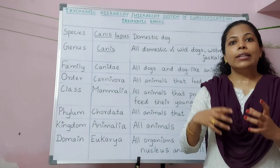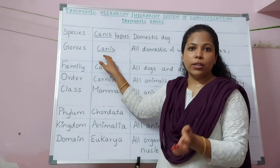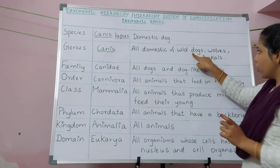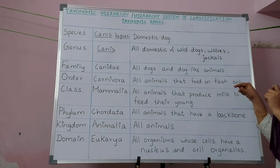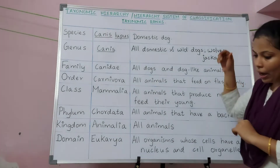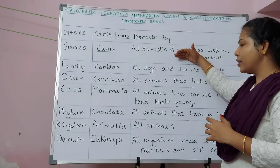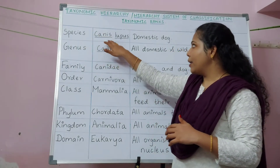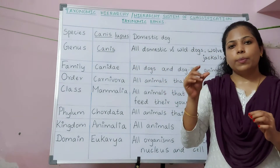The family Canidae includes all dog and dog-like animals. A family is a combination of similar genus. One such genus under family Canidae is genus Canis, which includes all dogs, wolves, and jackals. Since genus includes more than one category of animals, it must be further categorized into species.